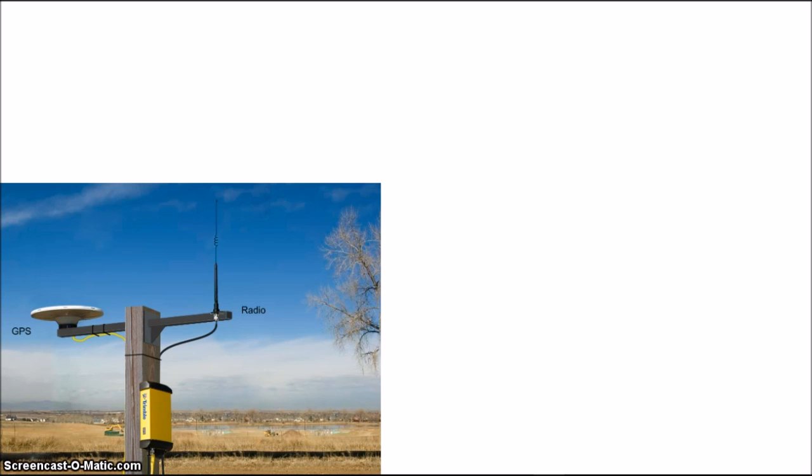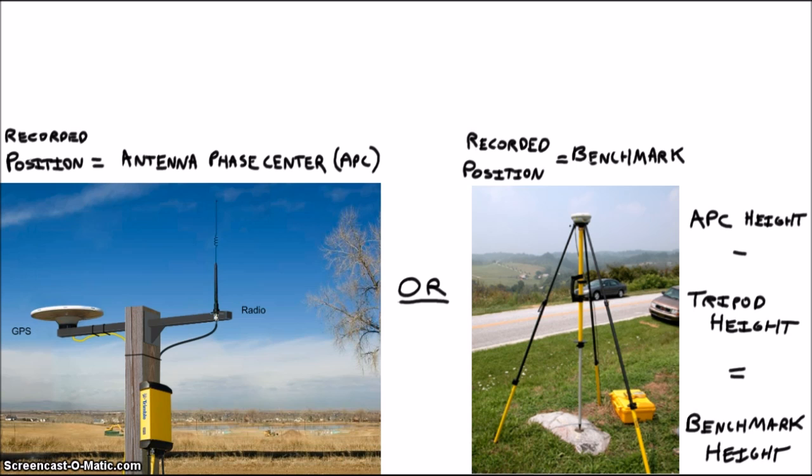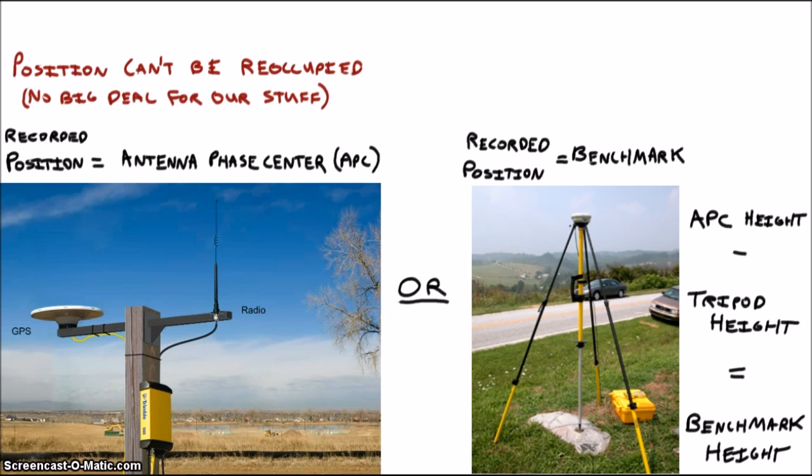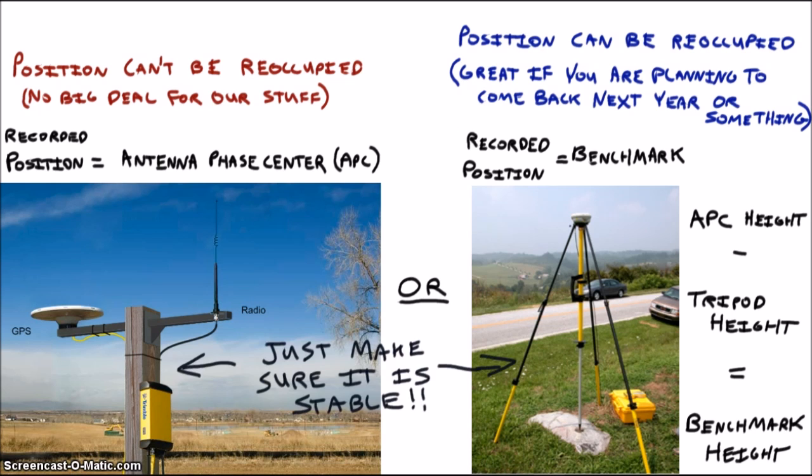Well, the key is whether or not you really want to establish a long-term station. In other words, if you need to revisit or reoccupy the position, you should have a permanent benchmark to mark and hold that physical position. For our temporary stations, I don't really care about some long-term occupation. I just need a stable antenna to measure the errors in real time so I can correct my rover position.